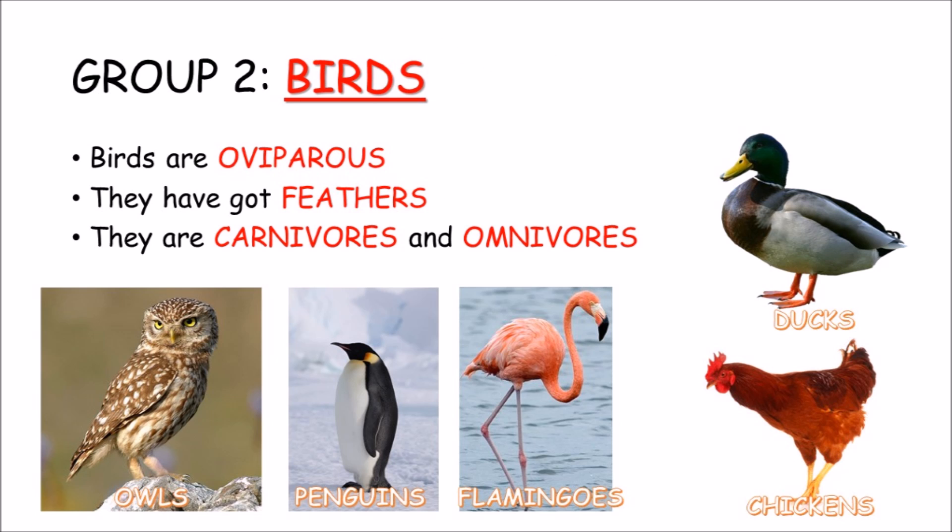Birds are oviparous. They use feathers to protect their bodies. They are carnivores and omnivores. Owls, penguins, flamingos, ducks and chickens are birds.